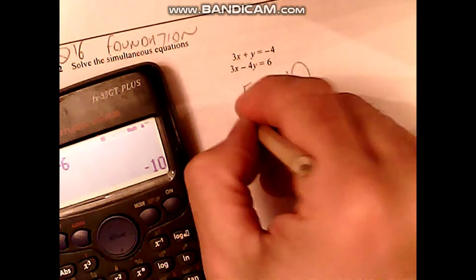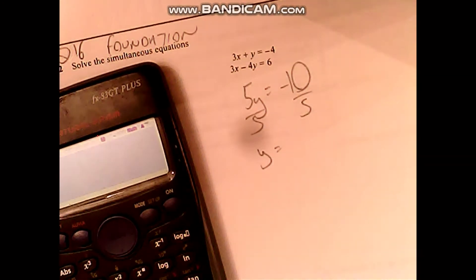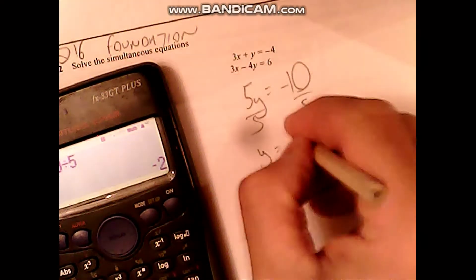I can solve this nicely. Divided by 5, y equals minus 10 divided by 5, which is minus 2.